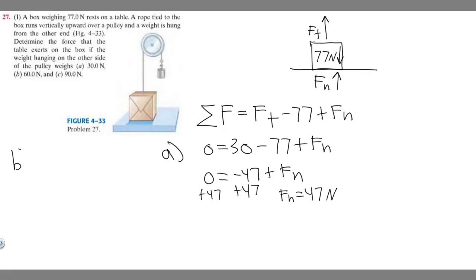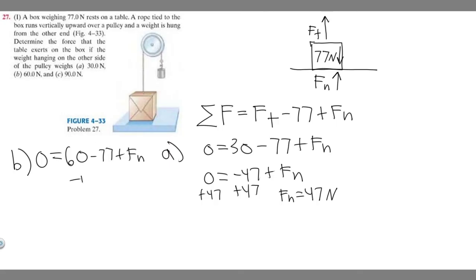The only thing changing between parts is the tension force. For part B, we plug in 60 instead of 30. So: 0 = 60 − 77 + F sub n, which becomes 0 = −17 + F sub n, giving F sub n equals 17 newtons. That's your answer to part B.